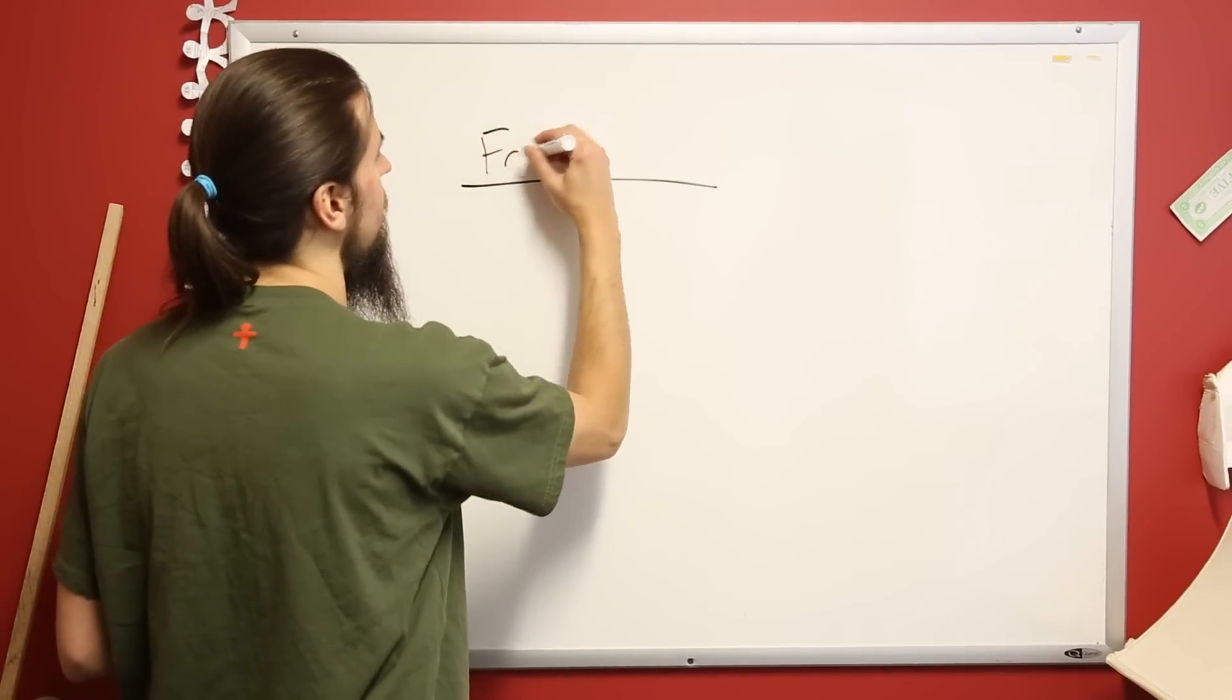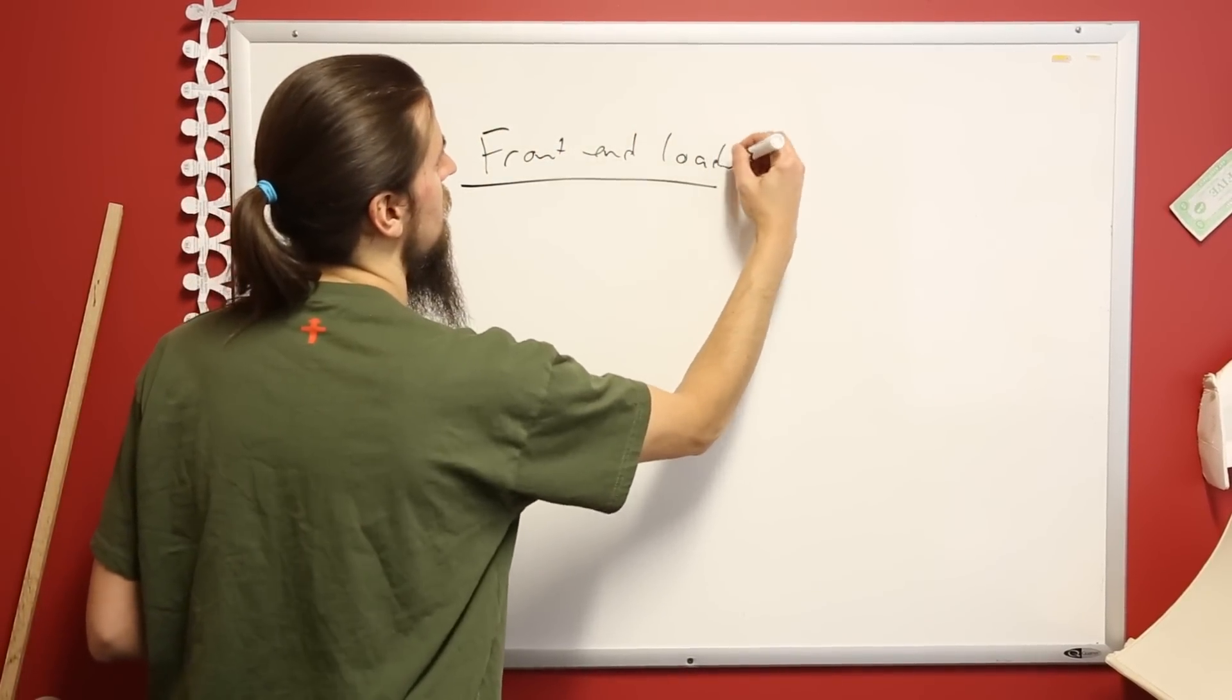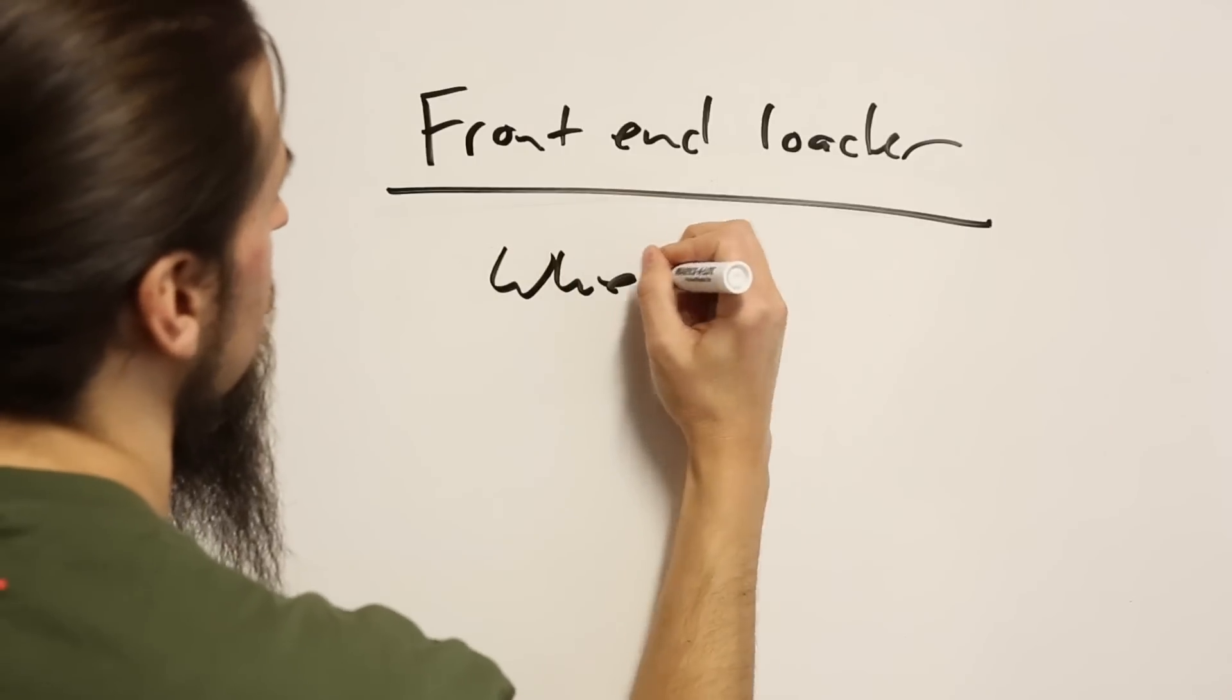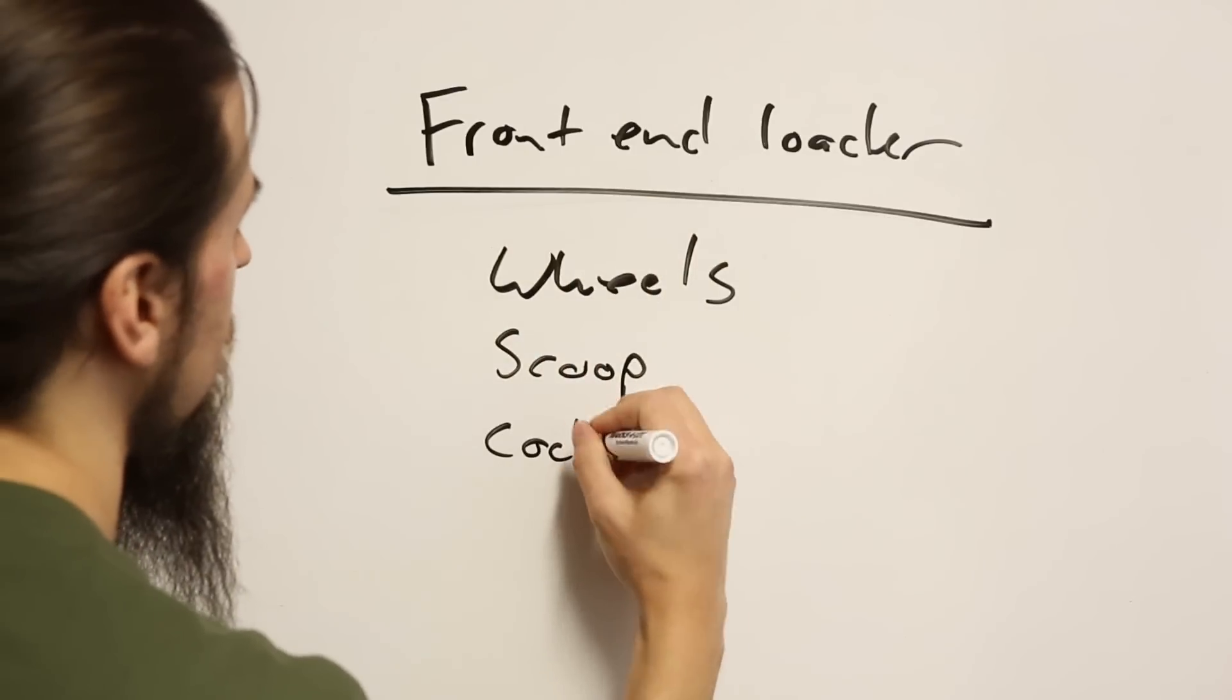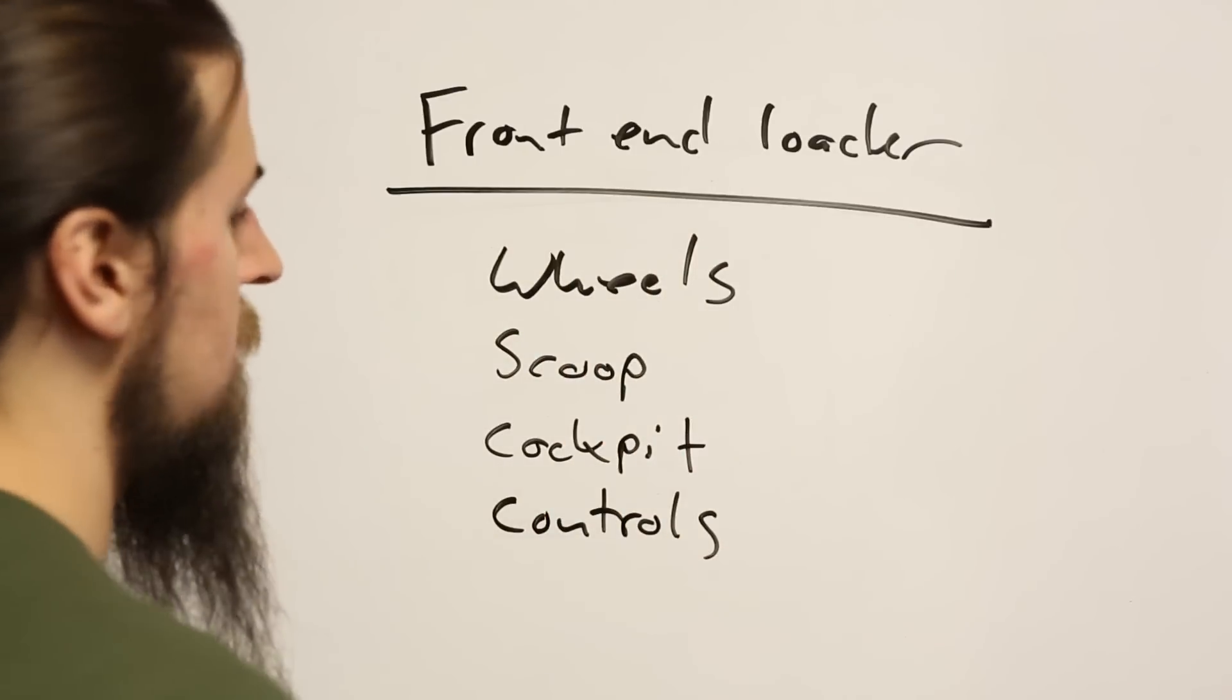As an example, I'll apply this process to building a front-end loader out of Legos. First, identify the needs. We'll need wheels, a tool, a place for an operator, and some controls.